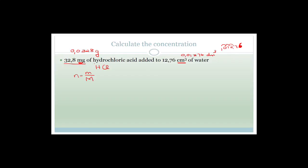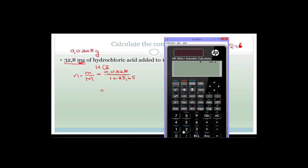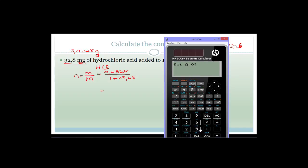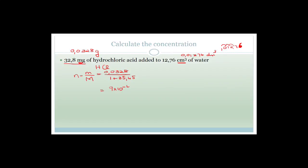Now we have the mass and the volume. The molar mass of HCl is 1 + 35.45 = 36.45 g/mol. Number of moles: n = 0.0328 ÷ 36.45 = 9 × 10⁻⁴ moles.